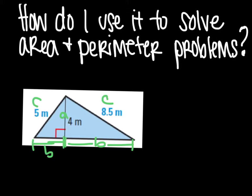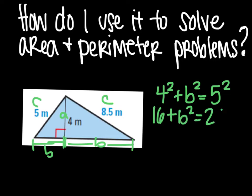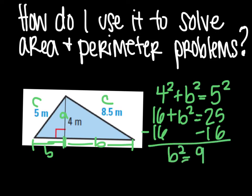So we'll start with our small triangle here. So A is 4. So 4 squared plus B squared equals 5 squared. So we have 16 plus B squared equals 25. Subtract 16 on both sides. B squared equals 9. So B equals 3.